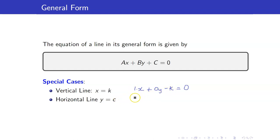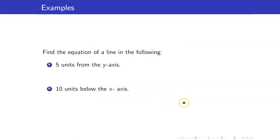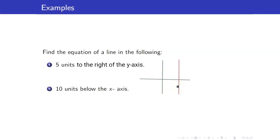For a horizontal line, your a is 0 because no x is appearing, and b is 1. Let us find the equation of a line which is 5 units to the right of the y-axis. This means that our line is a vertical line 5 units to the right. So this is the line x equals 5.